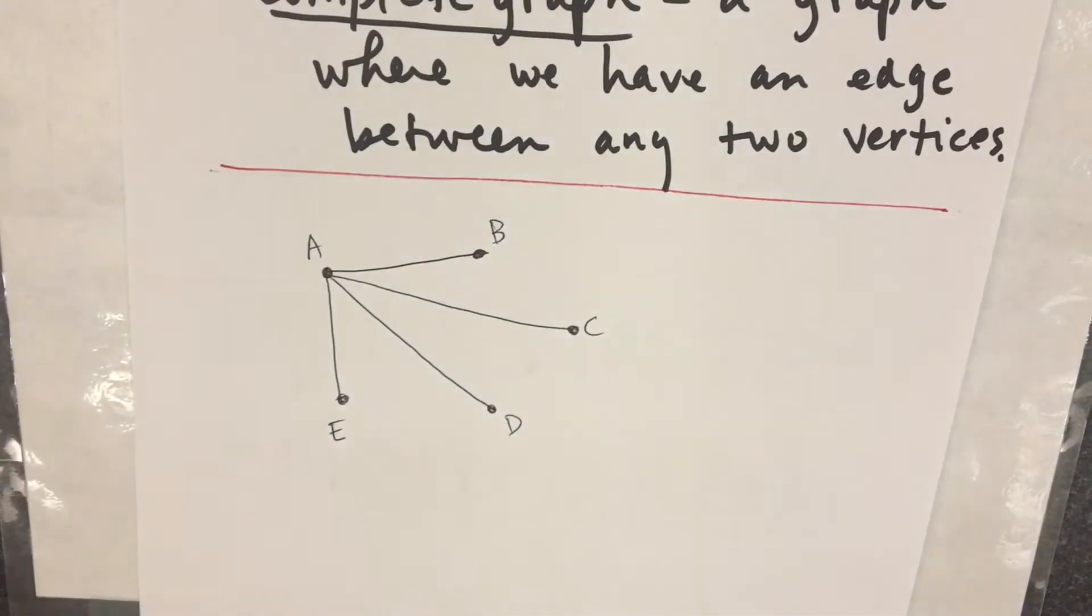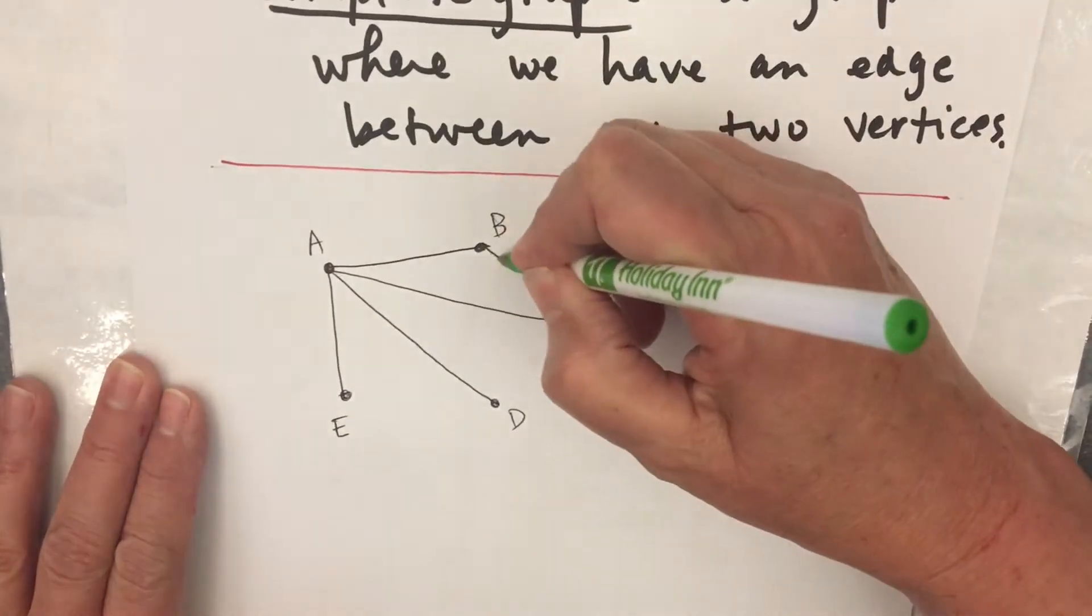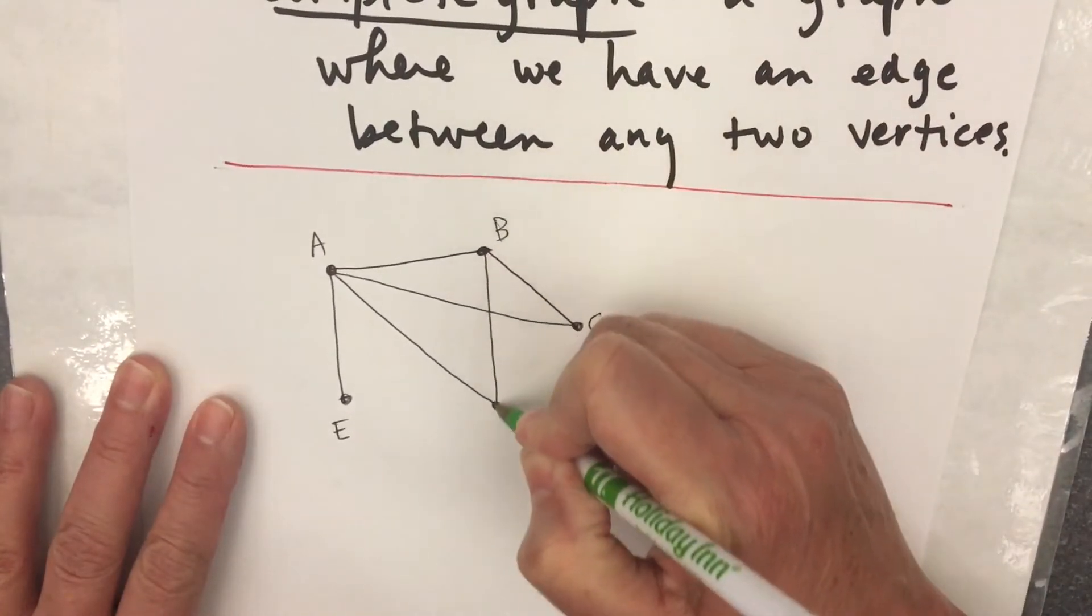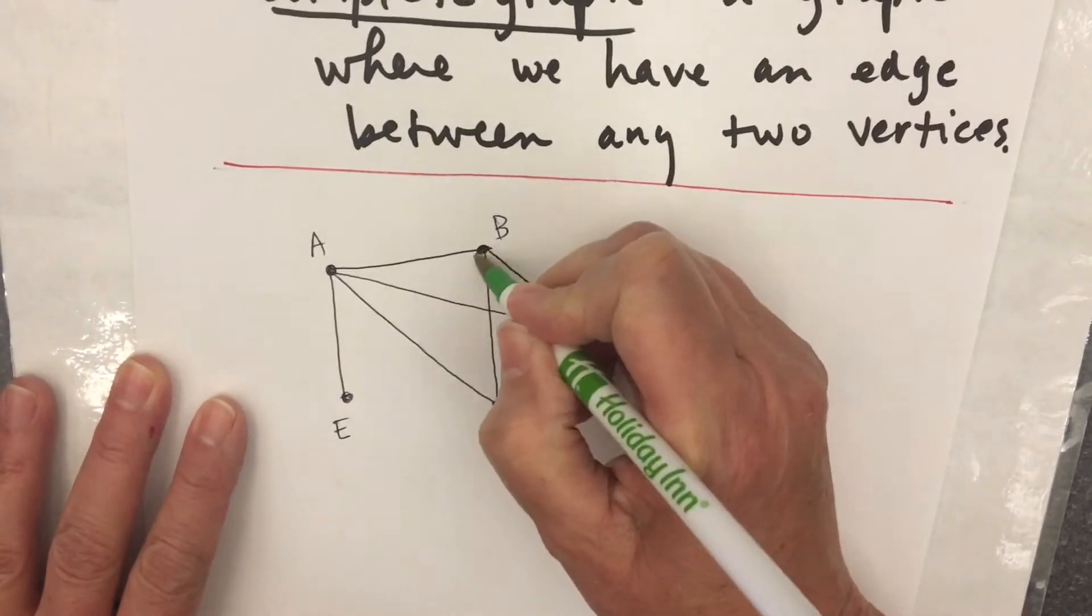No, we're not done. There will be an edge from B to C, an edge from B to D, and an edge from B to E.